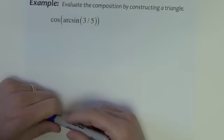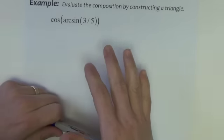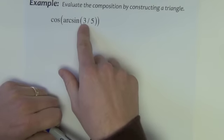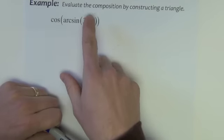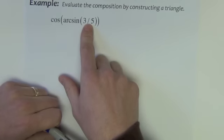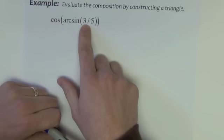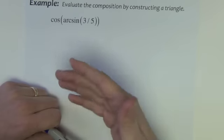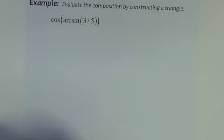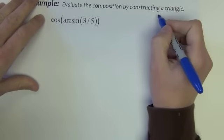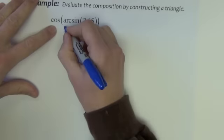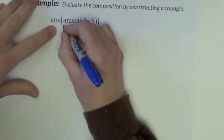Okay, now let's look at how do we evaluate a composition where the value three-fifths in this particular example is not a value that we can find on our unit circle construction that we've already made. It's not there. So how can we do this? And directions say evaluate the composition by constructing a triangle.